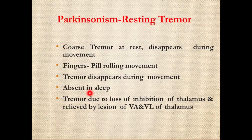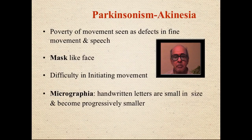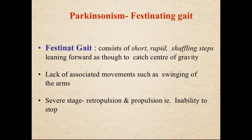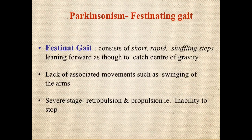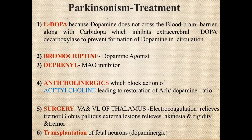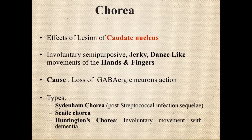The resting tremor in parkinsonism is absent during sleep. In advanced cases, there may be retropulsion or propulsion — the person has difficulty both starting and stopping — and may overshoot a designated stopping point. Treatment includes dopamine replacement, bromocriptine (a dopamine agonist), anticholinergic drugs, and surgical options.